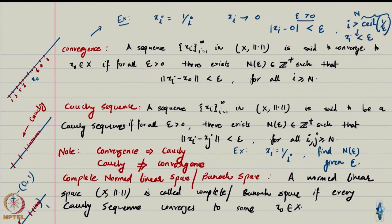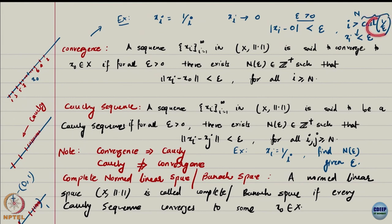Since 1/epsilon is not necessarily an integer, I apply the ceiling function. If 1/epsilon is say 100.37, then the ceiling of 1/epsilon is 101 — the ceiling function just takes the higher integer value. So that is how you compute N given epsilon. You can see that N has to depend on epsilon — it is almost impossible to have an N which does not depend on epsilon.